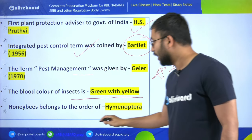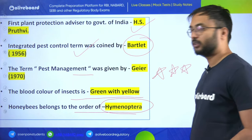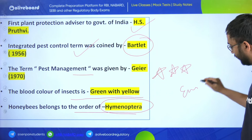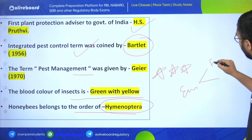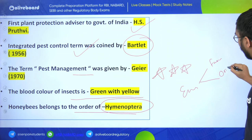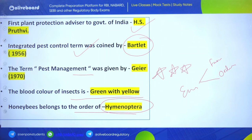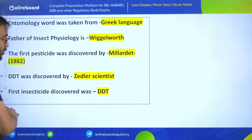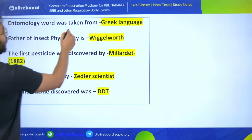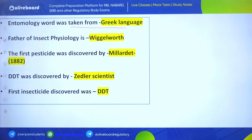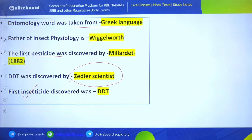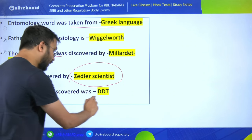The blood color of insects is green with yellow. Honeybees belong to the order Hymenoptera. For entomology, know the family and order of insects. The term entomology was taken from the Greek language. Father of insect physiology is Wigglesworth. The first pesticide was DDT, discovered by Müller. DDT was also discovered by Zeidler. The first insecticide discovered was DDT.